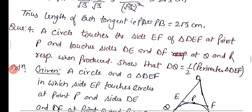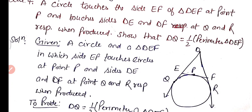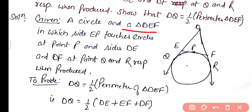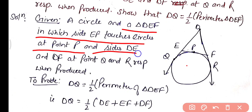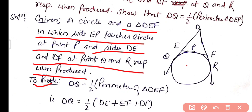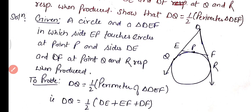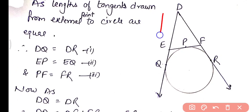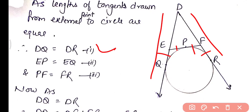Question four: a circle touches side EF of triangle DEF at point P, and touches sides DE and DF at points Q and R respectively when produced. Prove that DQ equals half the perimeter of triangle DEF. Since lengths of tangents from an external point are equal: DQ = DR, EP = EQ, and FR = FP.